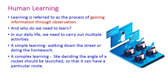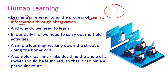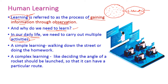First, let us try to understand what is learning. Learning is the process of gaining information through observation — we observe our environment, the objects available in it, and gather information from them. Why do we need to learn? In our day-to-day life we need to carry out multiple activities, so learning is very important. Learning may be very simple or very complex.